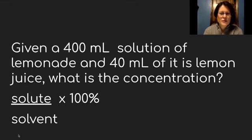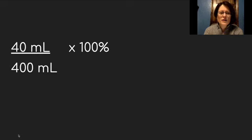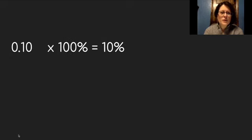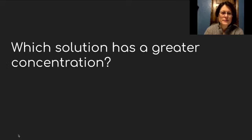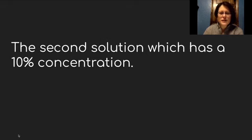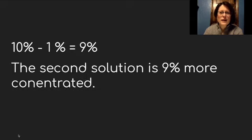Another example: given a 400 milliliter solution of lemonade and 40 milliliters of it is lemon juice, what is the concentration? Write down your formula — solute over solvent times 100%. The solute is 40 milliliters on top, and the solvent is 400 milliliters on the bottom. That gives us 40 mL divided by 400 mL times 100, which equals 0.10 times 100%, which equals 10%. The second solution has a greater concentration. How much greater? 10% minus 1% equals 9%, so the second solution is 9% more concentrated.